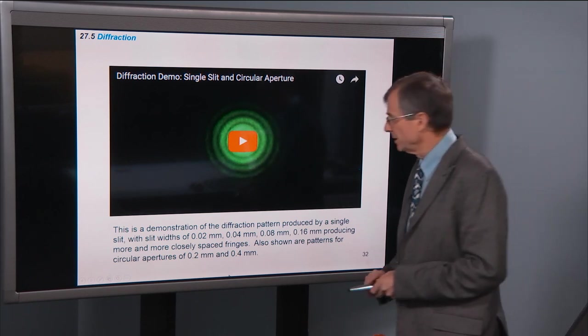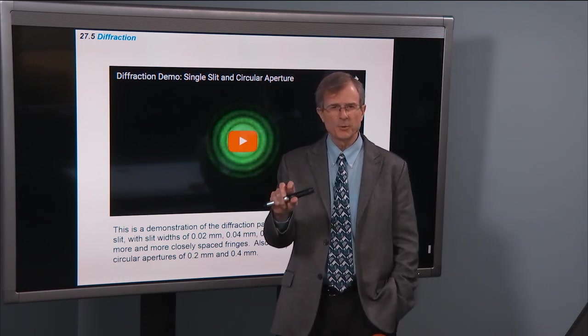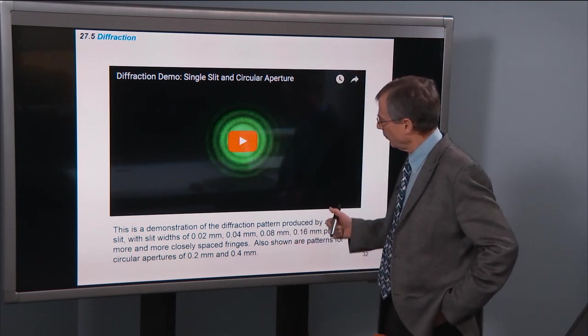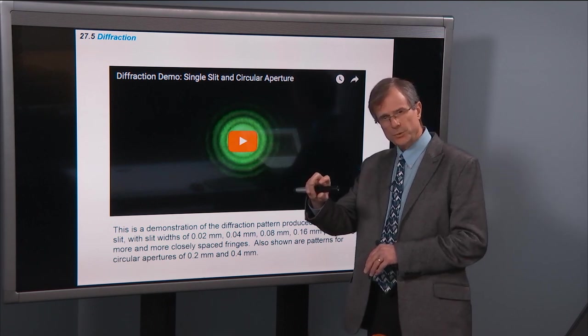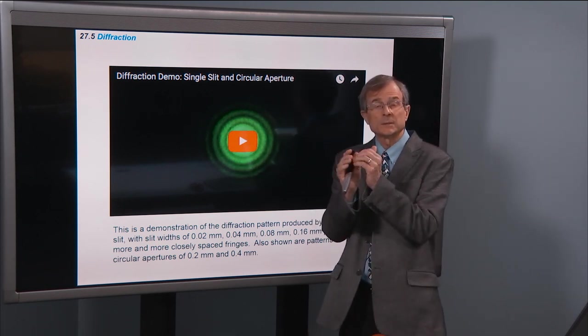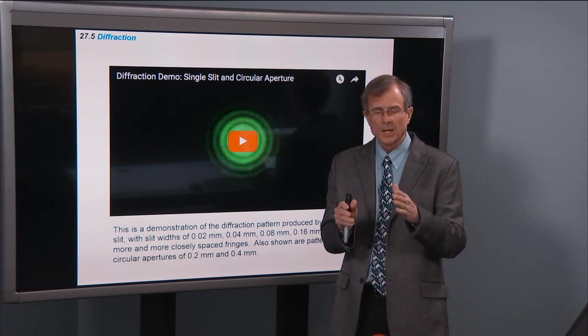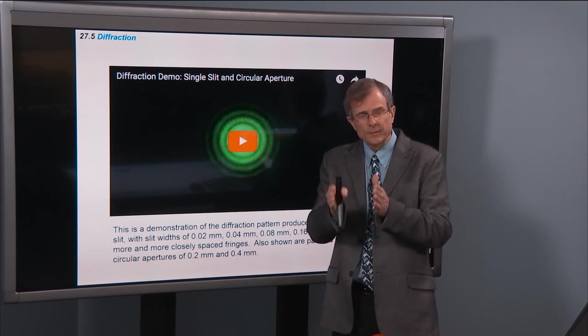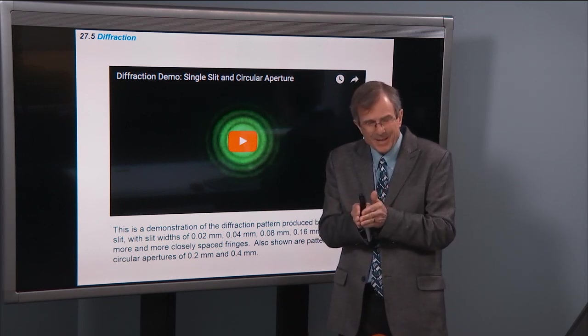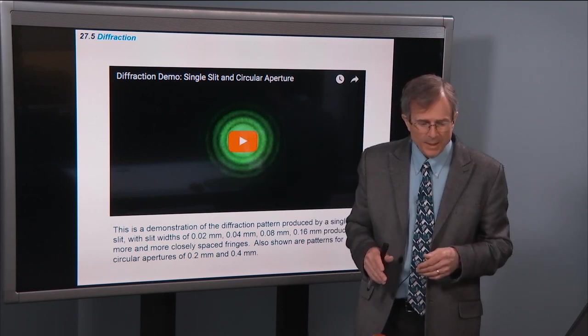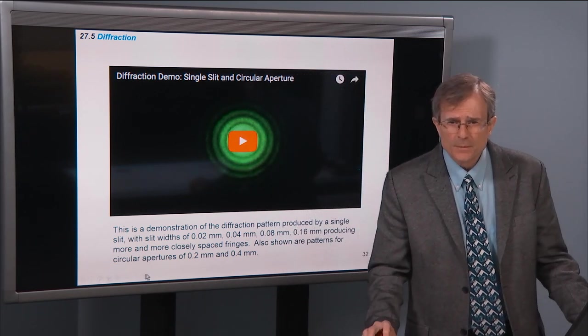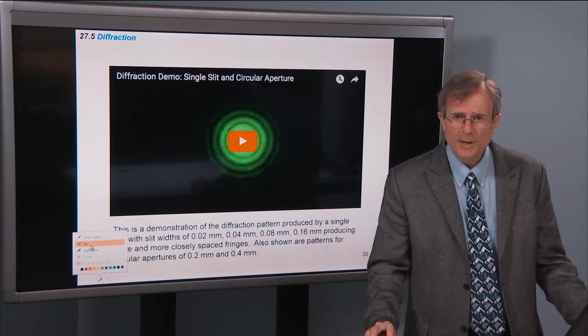Okay, quick correction, when I changed the dial from 0.2 millimeters to 0.4 millimeters, I said it was a smaller aperture. In fact, it was a larger aperture. But what we saw in moving from 0.2 millimeter aperture of the circular aperture diameter to 0.4 is that the rings got tighter together. That's exactly the same thing that we saw when we increased the slit width. As we got a wider and wider slit width in the earlier part of the demo, the wider the width was, the tighter the fringes, the closer the fringes became.